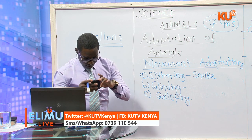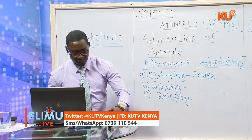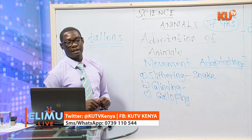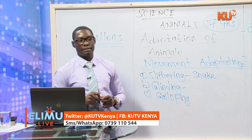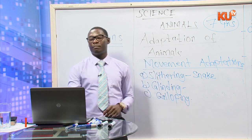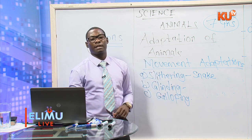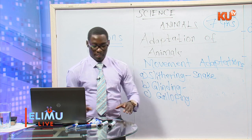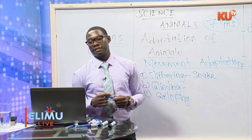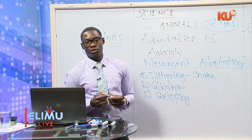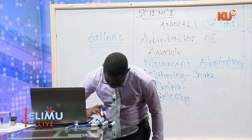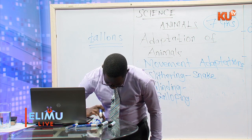Someone is asking about carnassial teeth. Carnassial teeth are modified premolars and molars. Their main purpose is to crush bones and slice flesh. So carnassial teeth are used to crush bones and slice the flesh.